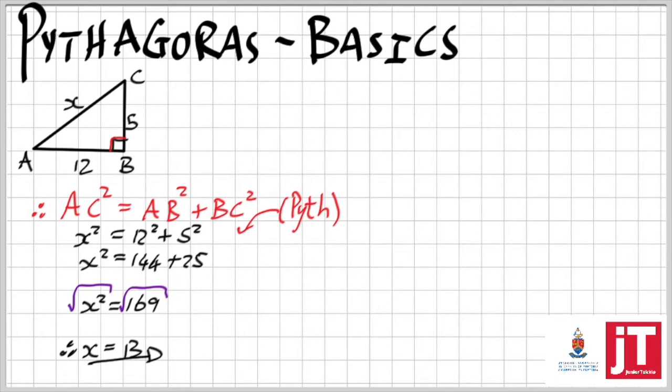Now, interesting little thing that I want to write down is I've got 5 to 12 to 13, which is interesting that it is actually a Pythagorean triplet. In other words, if the short side is 5 and the other short side is 12, then the hypotenuse will always be 13.